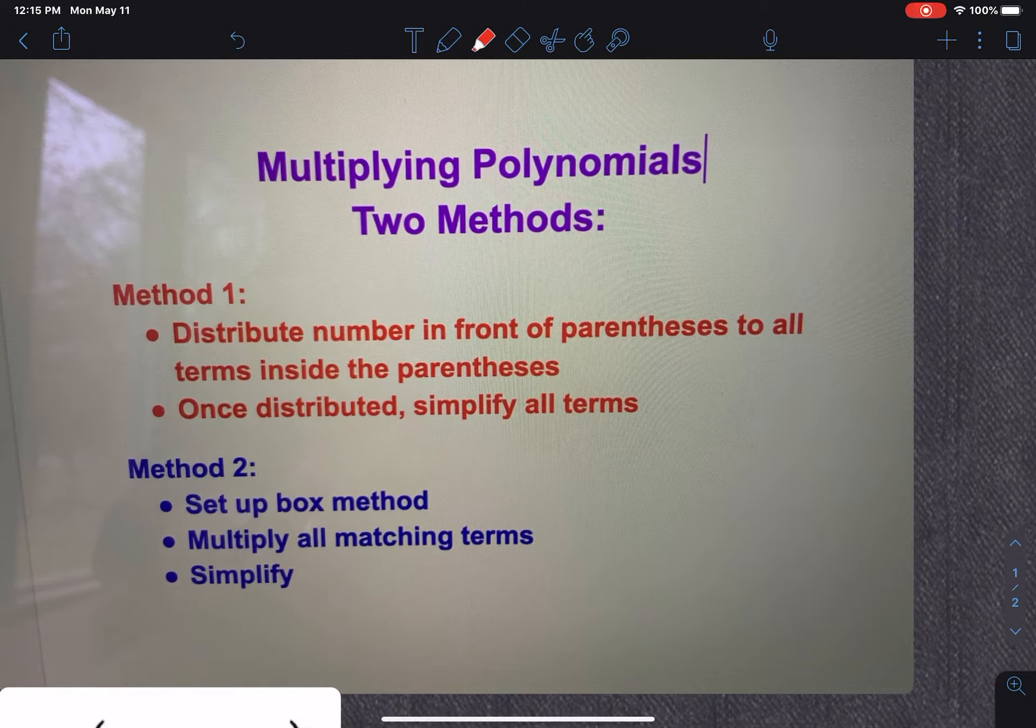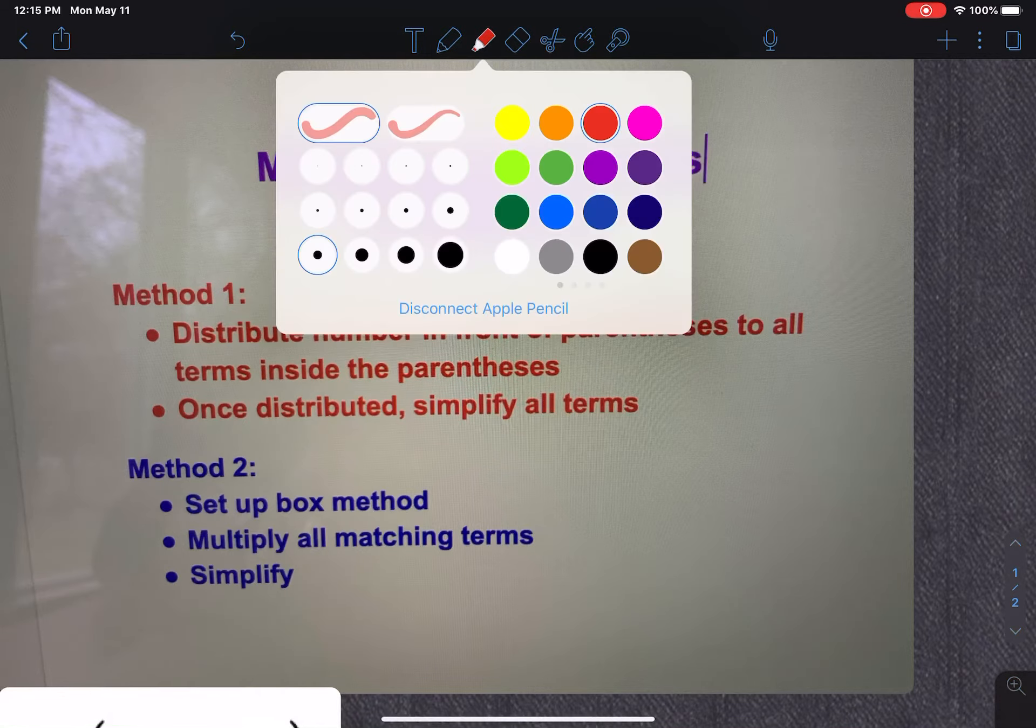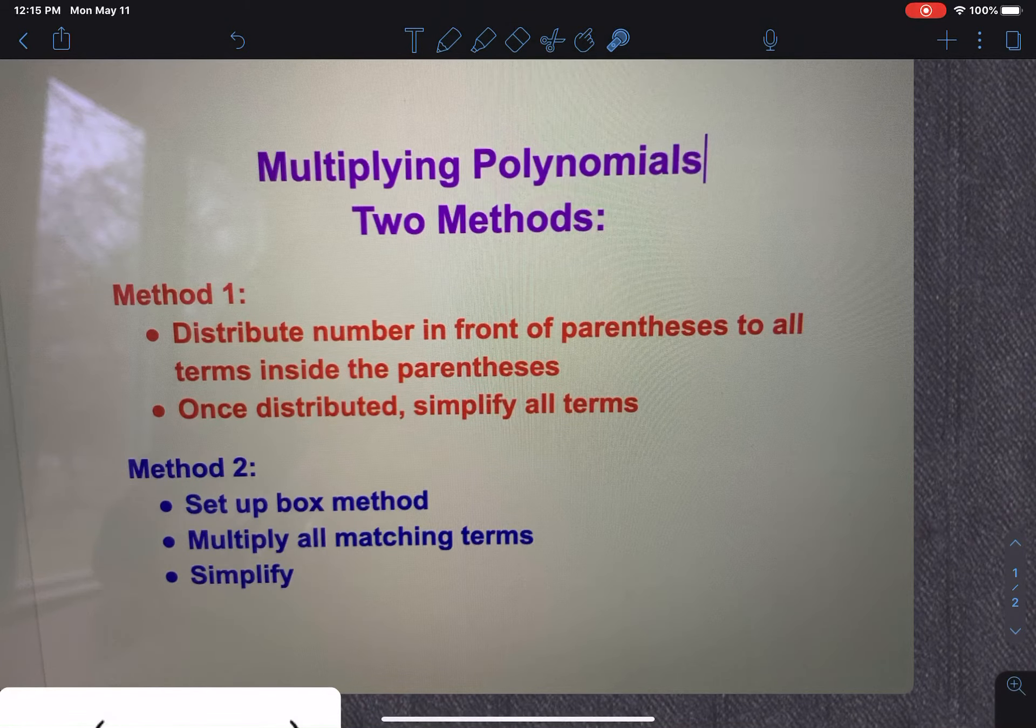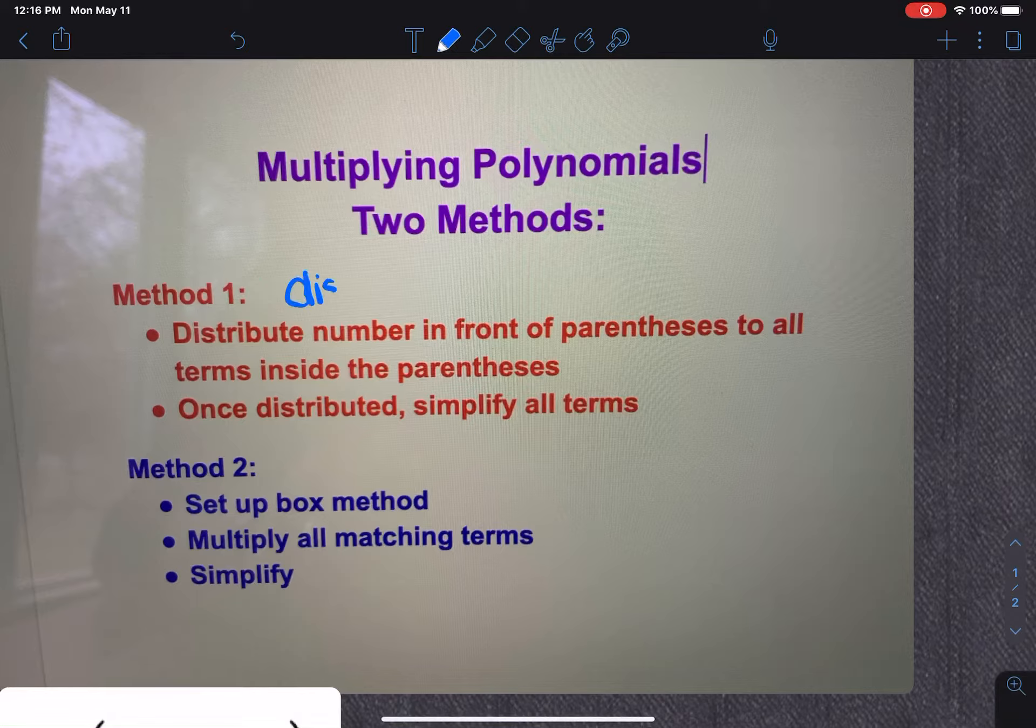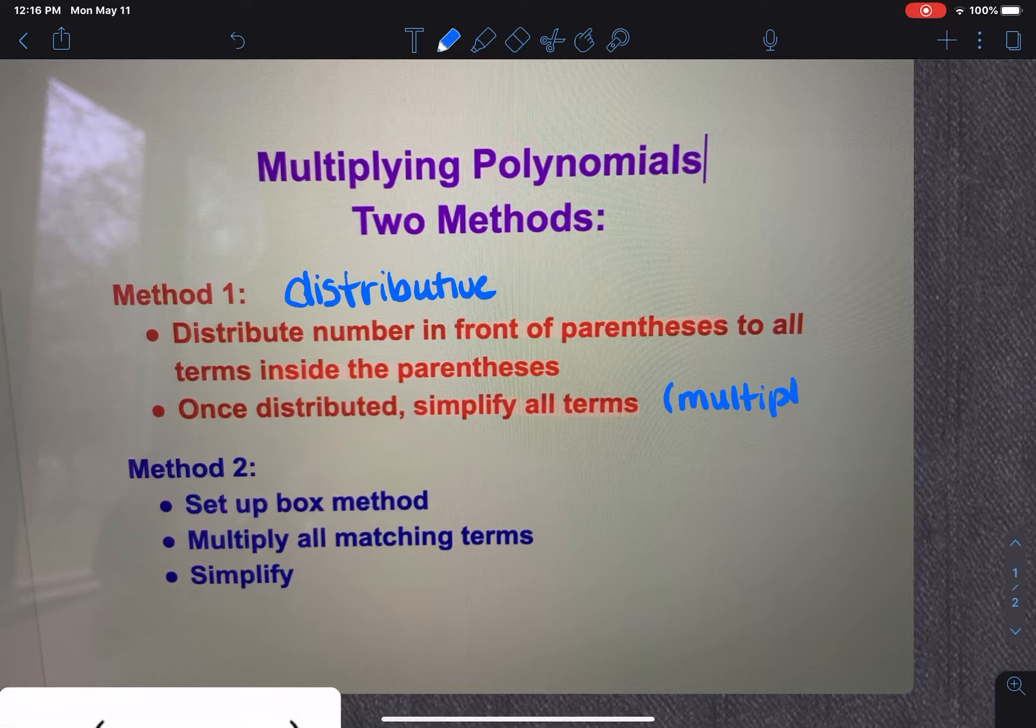So we kind of have two methods that we're going to deal with. One of them, this method one, I primarily talk about as being the distributive method. And on this one, we have to distribute a number in front of the parentheses to all the terms inside the parentheses. And then once they're distributed, we're going to simplify all the terms that are in there. And for us, that means that I'm probably going to have to do some type of multiplying and probably other stuff too. It just depends on the problem that you have.